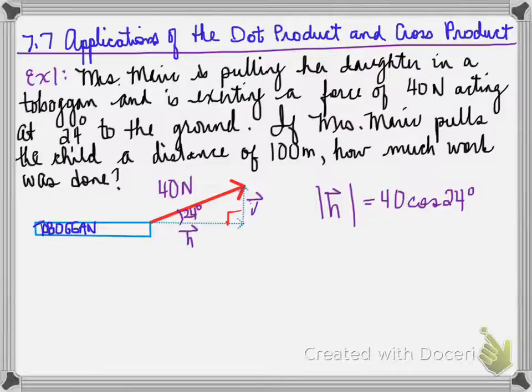we use the cosine ratio. And we determine that 40 times cosine of 24 is equal to the magnitude of the h vector, which is equal to 36.54 newtons. So that's the force that was pulled in a horizontal direction.